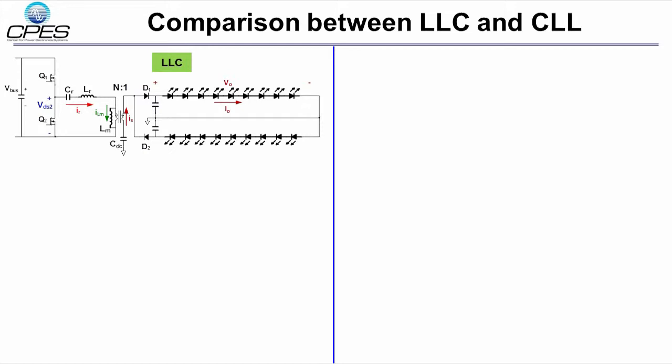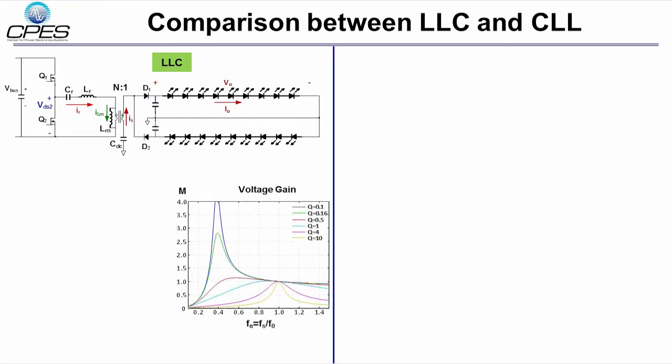For the conventional LLC resonant converter, there are three resonant elements: LR, CR, and LM. When we look at the voltage gain of LLC, it can be divided into two operating zones by the dashed line.